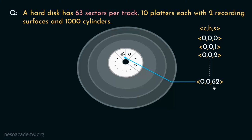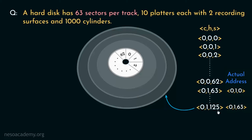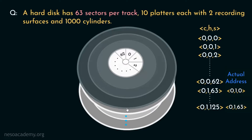After sector number 62, the next sector is on the other surface — surface number 1 — so we go to cylinder 0, surface 1. Starting from 0,1,0, the next 63 sectors are on that surface, and the last sector there is 0,1,62 (sector 125 overall). After all 20 surfaces are filled — 10 platters times 2 surfaces each — the next sector moves to the next cylinder. This is how the C-H-S triple addresses each sector.